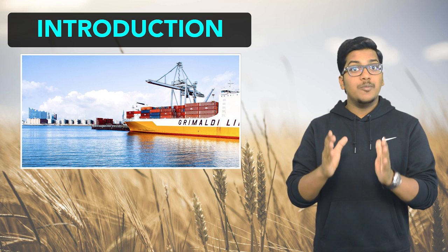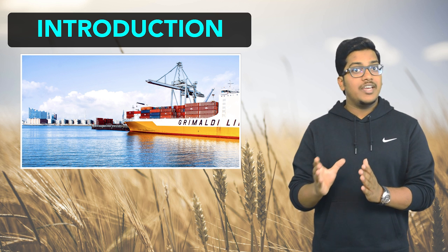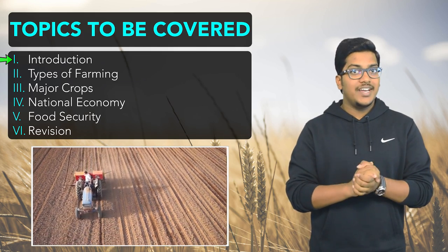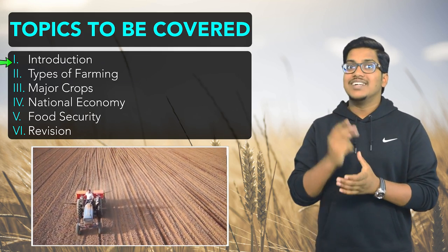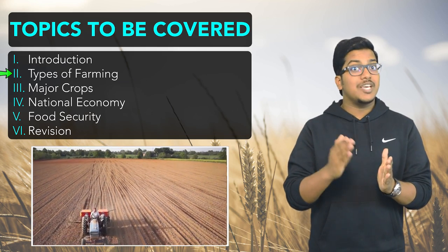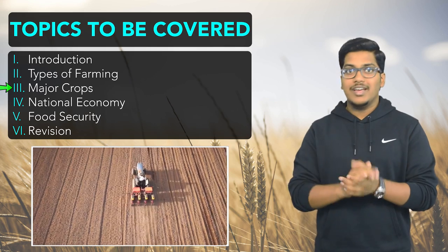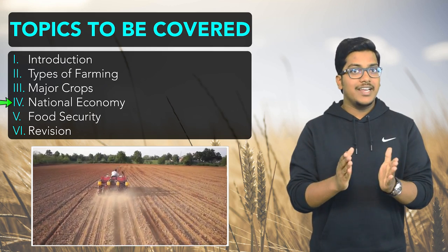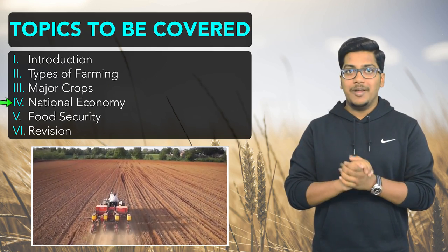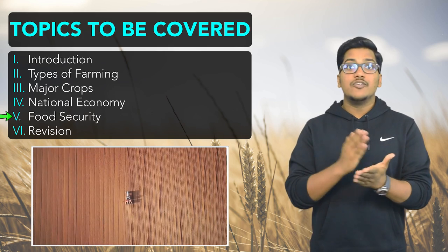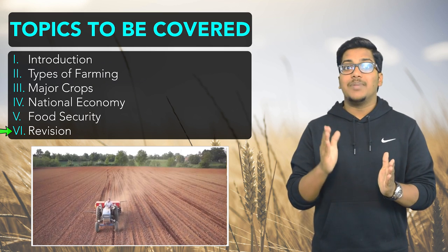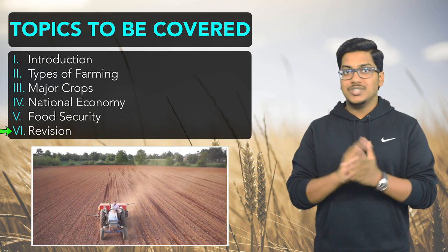India के इतने important part agriculture के बारे में और deeply study करना बहुत important है. इस chapter को हम total six lectures में complete करेंगे. ये first lecture है जो की introductory है. Second lecture में हम farming की types के बारे में बात करेंगे. Third lecture में हम कुछ major crops को deeply study करेंगे. Fourth lecture में हम बात करेंगे national economy के बारे में. Fifth lecture में हम बात करेंगे food security के बारे में, और sixth lecture में हम इस पूरे chapter को एक बार short में revise करेंगे.